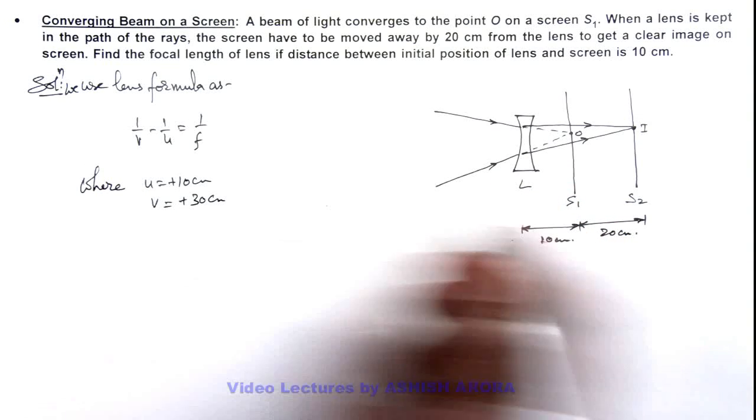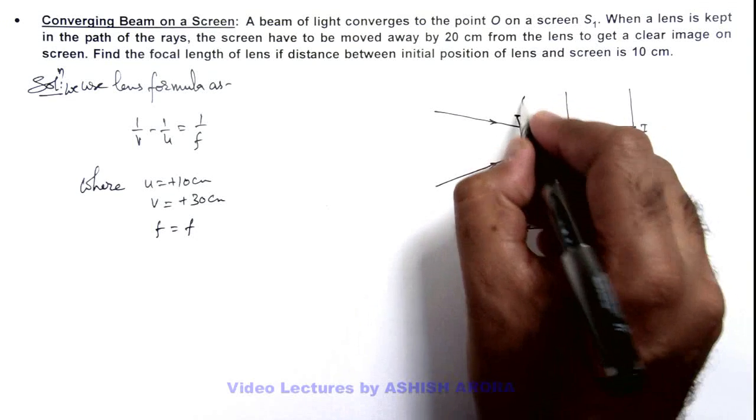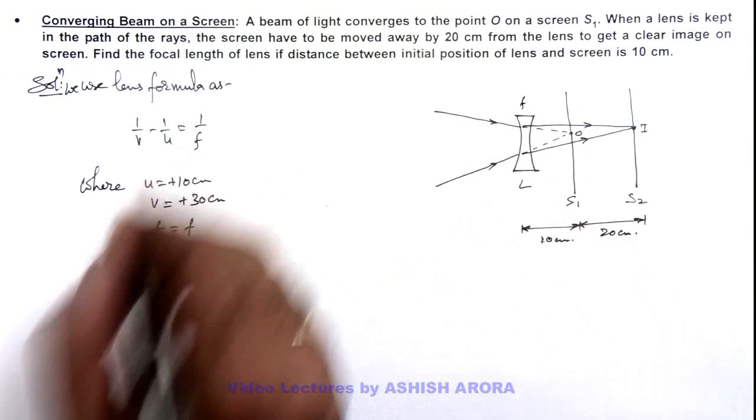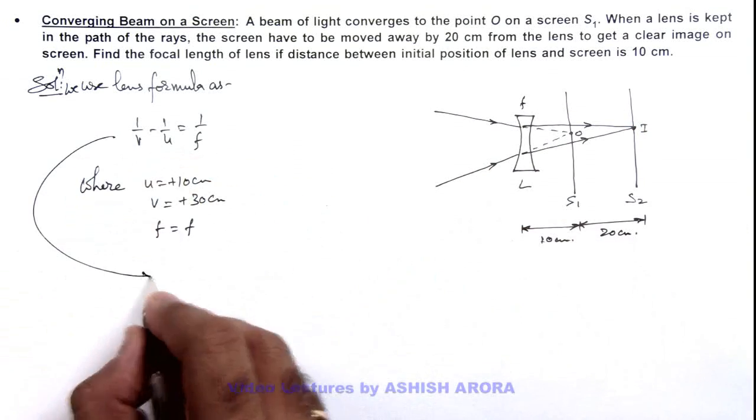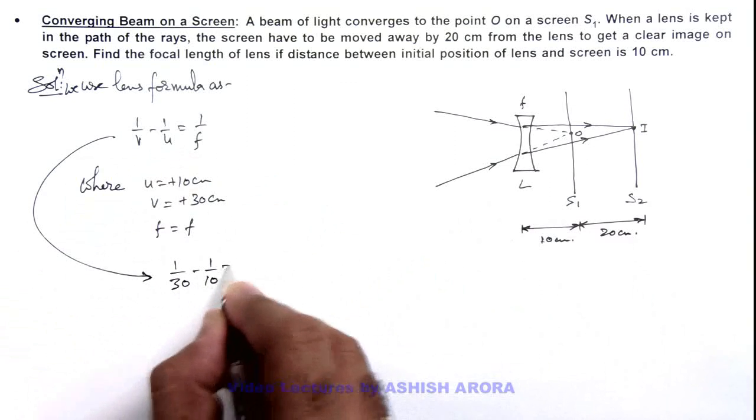The focal length of this lens we can take as f. If we substitute the values, this relation becomes 1/30 - 1/10 = 1/f.